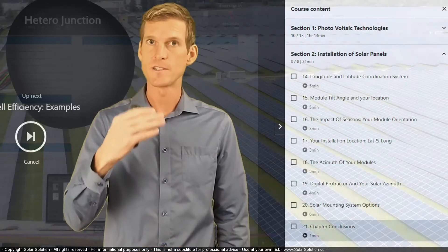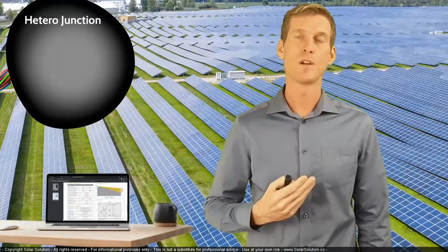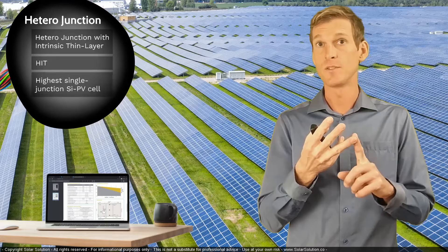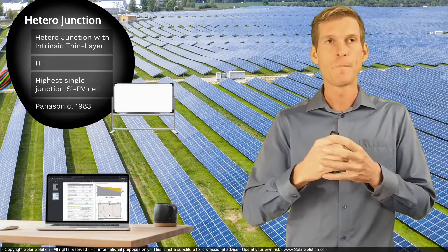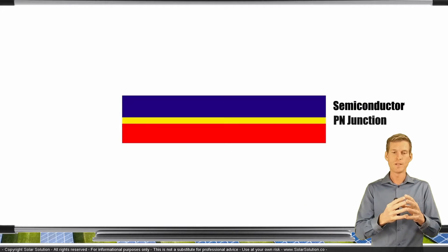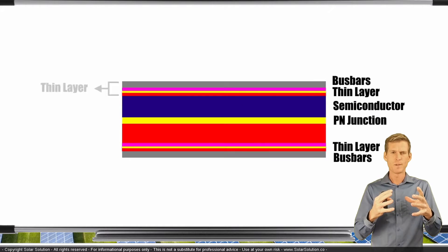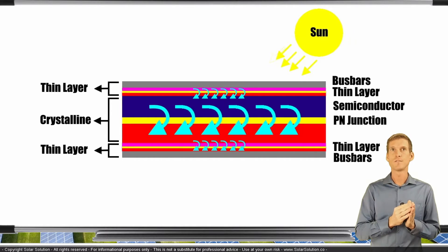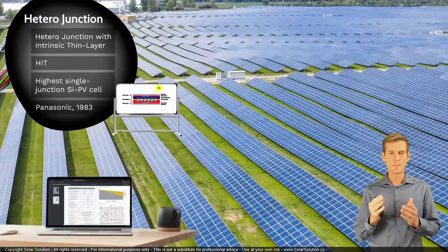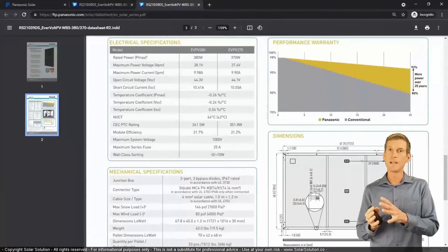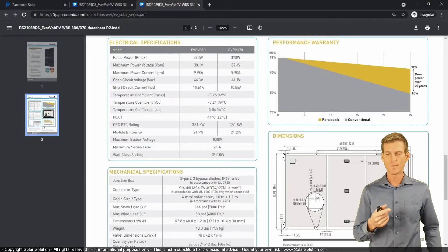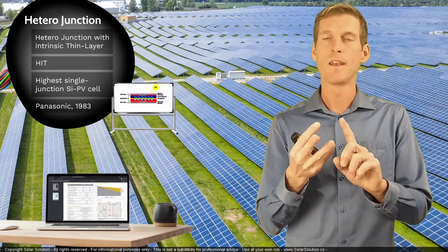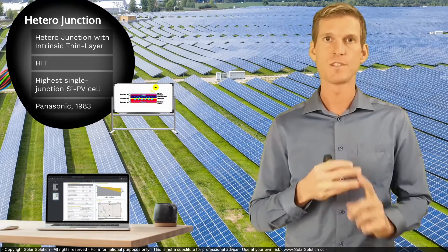The format of the course is fairly consistent throughout. When we start a mini-topic, I'll give you the theory — ABC is what you need to know. Then I'll take you to the whiteboard and further explain the theory with visual representations, because I believe this is a very easy way to fully comprehend a topic. And then once we've done that, we often go online and I'll show you examples of products or services related to the theory we've just discussed.